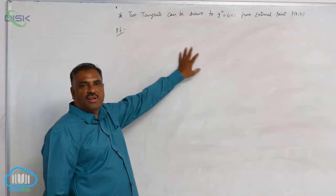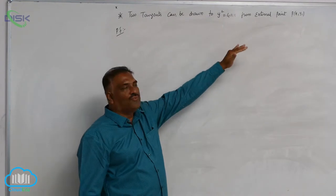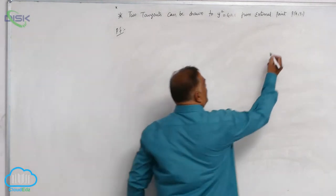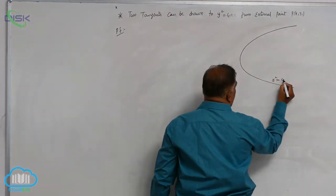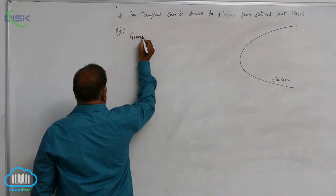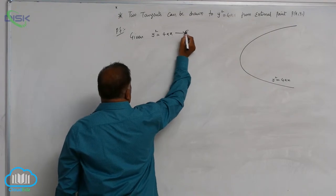Let us discuss one important result. Two tangents can be drawn to y square equal to 4ax from external point x1, y1. Let us see the parabola is like this, y square equal to 4ax. So the given parabola is y square equal to 4ax, equation 1.